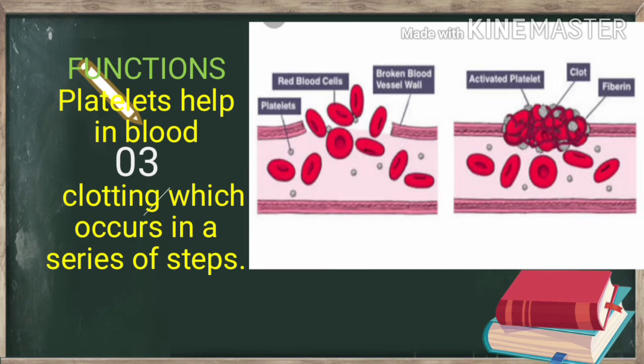Blood platelets are very important in the clotting of blood at the site of injury. The platelets disintegrate to release a chemical substance called thrombokinase, which initiates the process of clotting of blood.